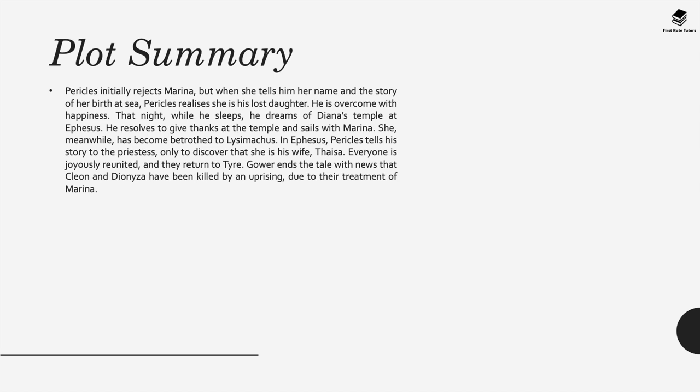Pericles initially rejects Marina, but when she tells him her name and the story of her birth at sea, he realises she is his lost daughter. Overcome with happiness, that night while he sleeps he dreams of Diana's temple at Ephesus. He resolves to give thanks there, and Marina has become betrothed to Lysimachus. At Ephesus, Pericles tells his story to a priestess only to discover that she is his wife, Thaisa. Everyone is joyously reunited. Gower ends the tale with news that Cleon and Dionysa have been killed by an uprising due to the treatment of Marina.